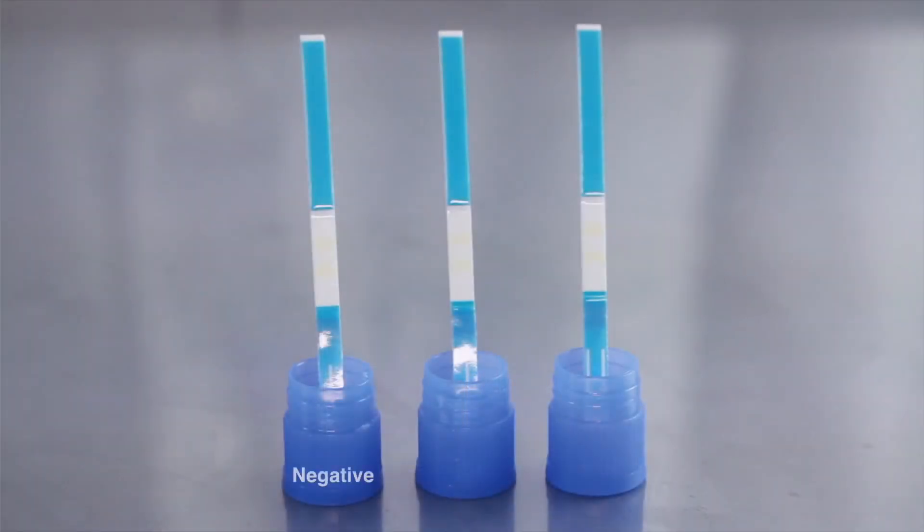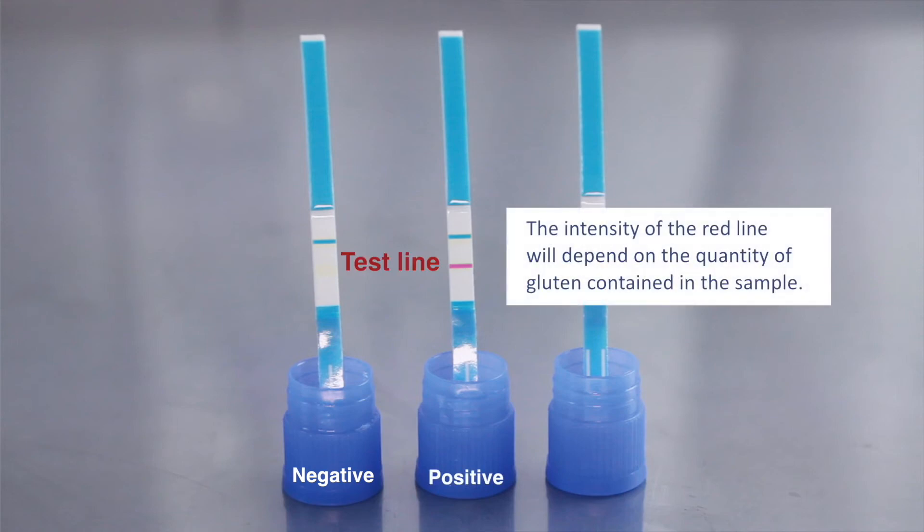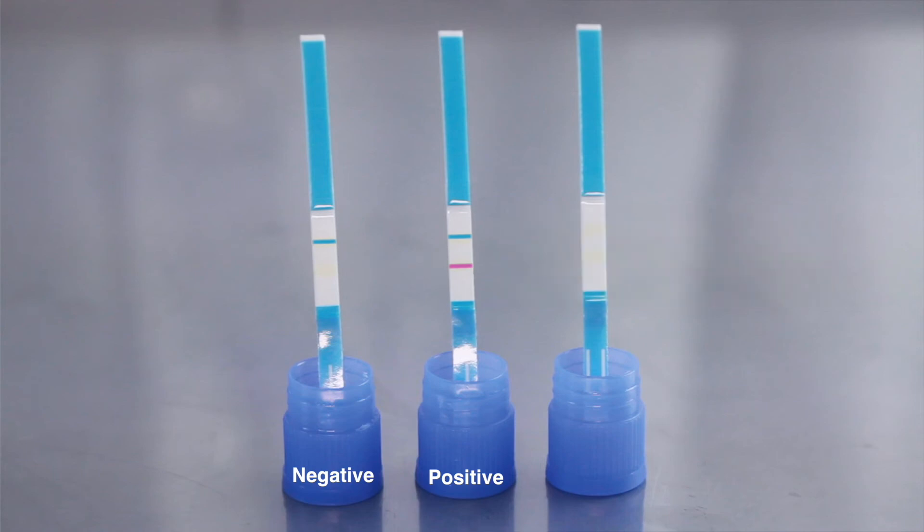For a negative result, a single blue line or control line appears in the central part of the test. For a positive result, a red line will appear below the blue control line. If the blue control line does not appear, the test is considered invalid.